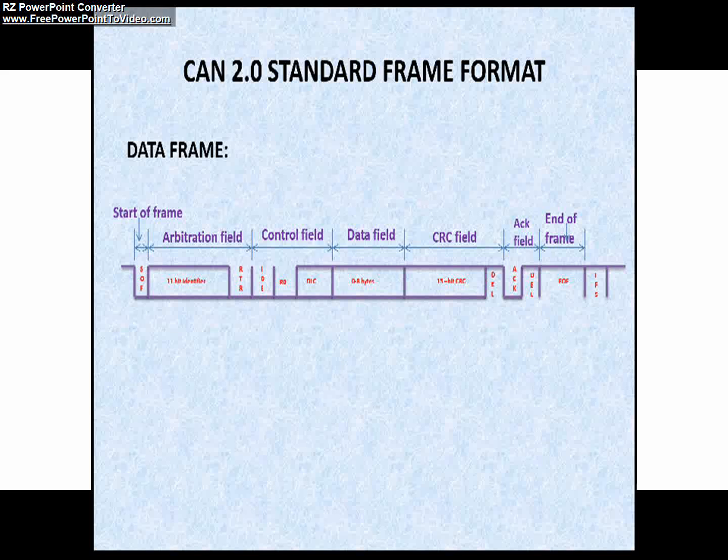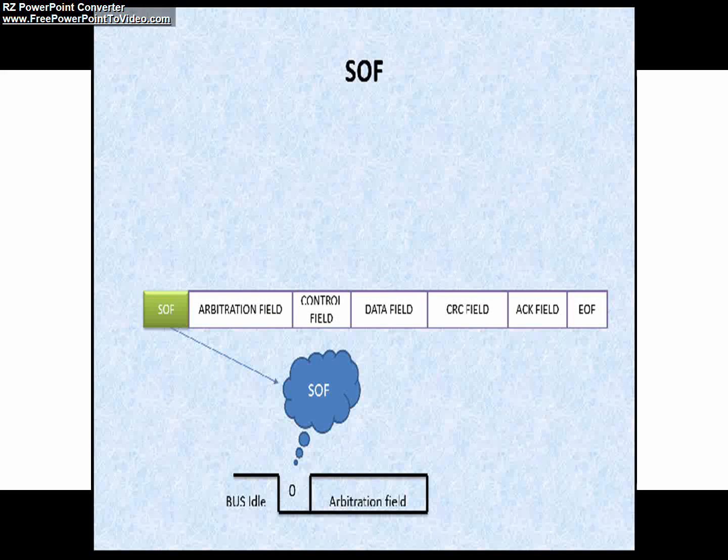Let's begin with the first field, Start of Frame. SOF marks the start of any CAN Frame. It is always dominant bit and it furnishes the falling edge for node synchronization of transmitter and receiver. As you can see in this picture, SOF is always dominant.